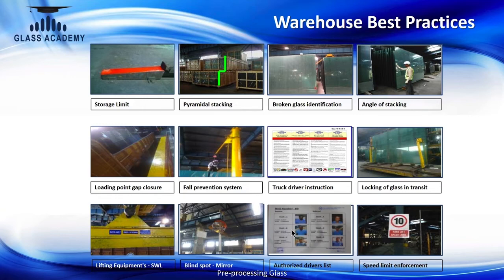Best practices used in warehouses where glass is stored include: maintaining a storage limit for racks — you cannot keep stacking indefinitely. When crates are stored, use pyramidal stacking, meaning the upper tier should hold fewer units than the base. Broken glass in the warehouse must be identified promptly. The angle of stacking — very important — must be maintained at more than 3 degrees and regularly checked and ensured. Pits created when trucks enter must be closed with no gaps. Fall prevention and protection systems must be available wherever people work at height on trucks or elevated areas.